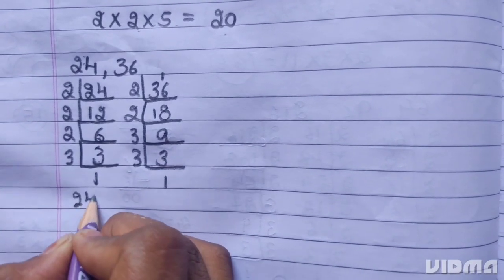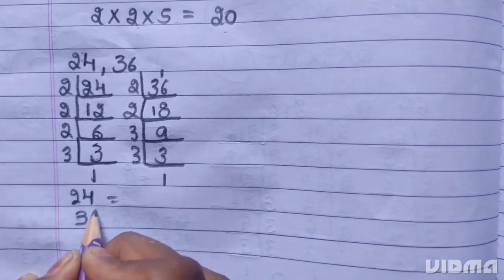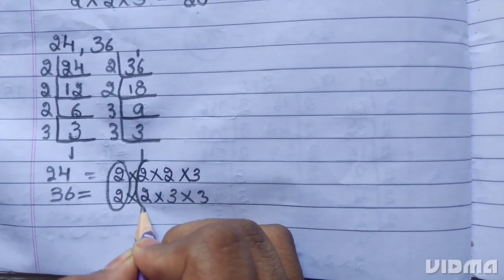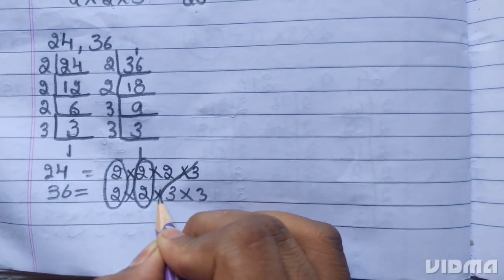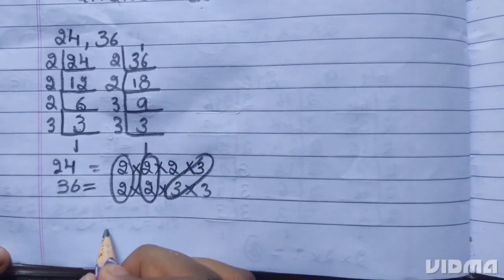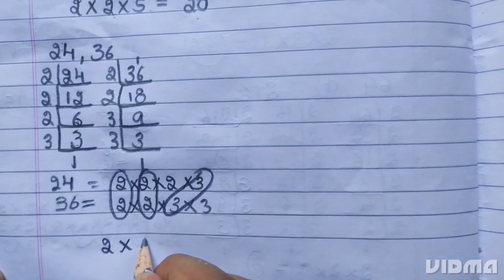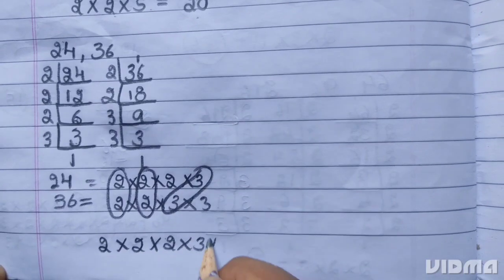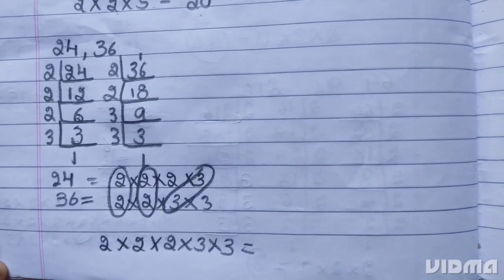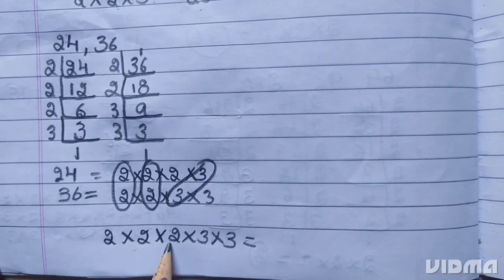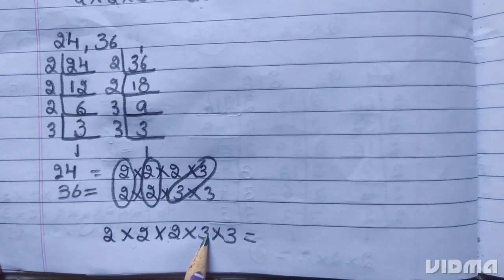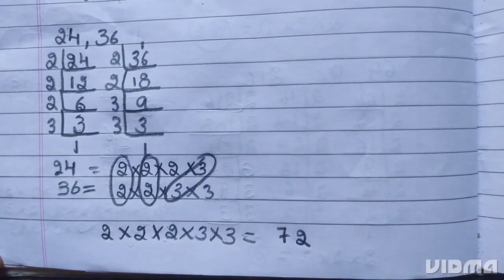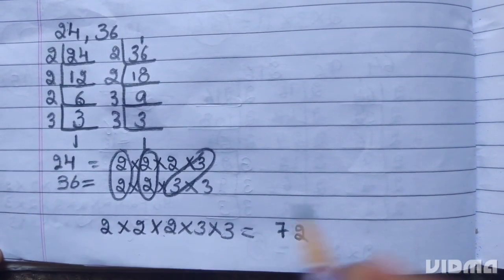Now for 24 and 36. The common pairs are: 2, 2 pair and 2, 3 pair. LCM is 2 times 2 times 2 times 2 times 3 times 3. 2 times 2 are 4, 4 times 2 are 8, 8 times 3 are 24, 24 times 3 are 72. LCM of 24 and 36 is 72.